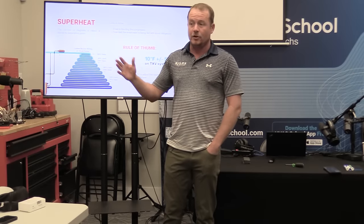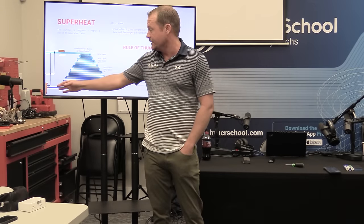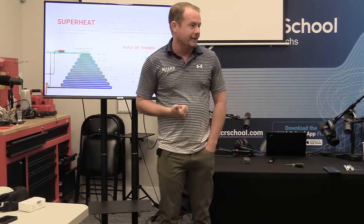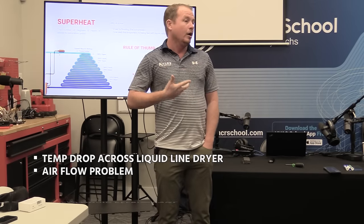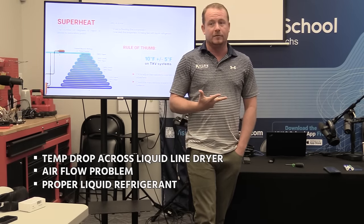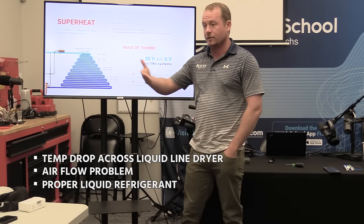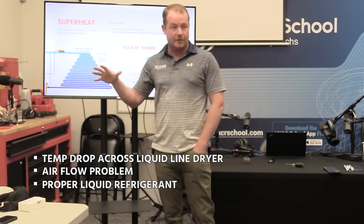We watch our superheat on most of the systems we work on just to make sure the metering device is doing what it's supposed to do. If our superheat drops too low, that's an indication the valve is overfeeding. If our superheat is too high, that's an indication the valve is underfeeding — if everything else is how it's supposed to be. And that's the key thing.